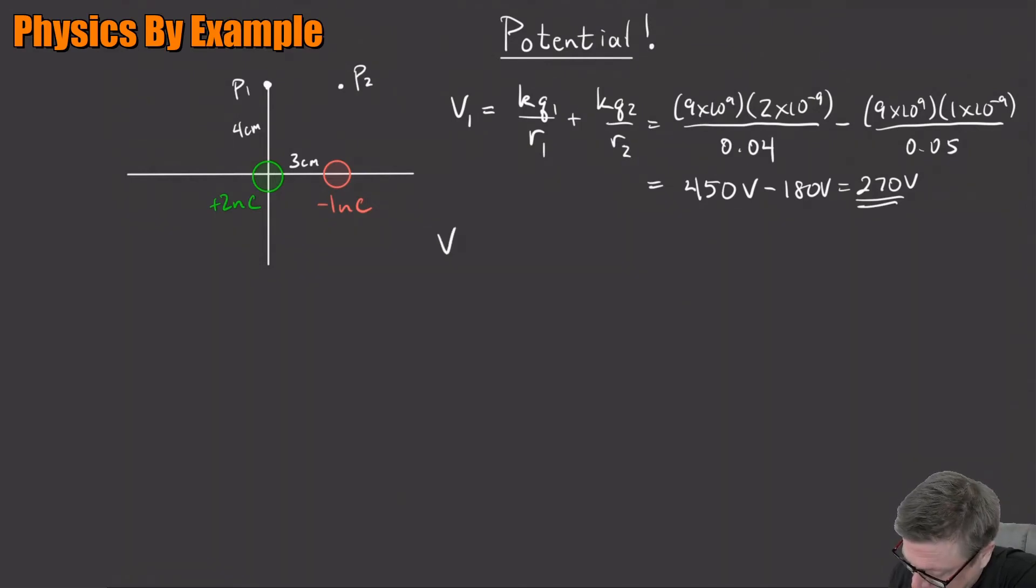How about V2? The potential at P2, I'm going to do the exact same thing. I'll shorten it up just a little bit. Now the distances are a little bit different. R1 is now 5, and R2 is now 4. So K times Q. So that's going to be 18 over 0.05 minus 9 over 0.04.